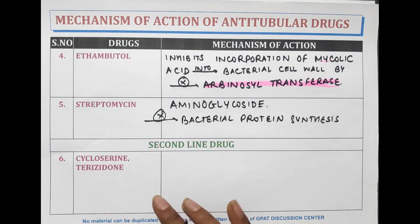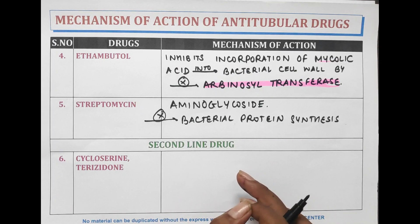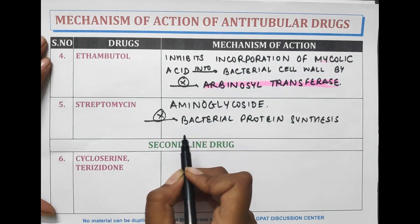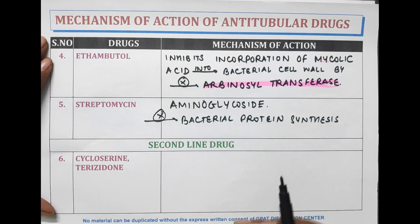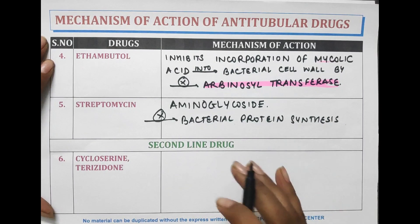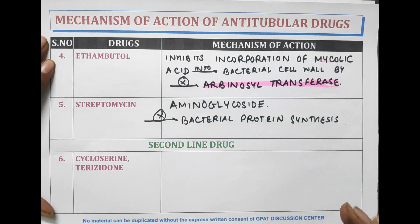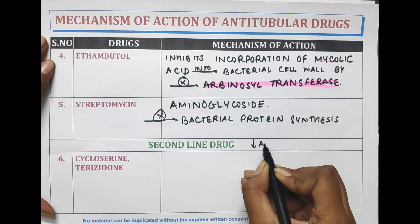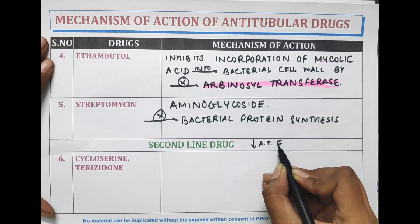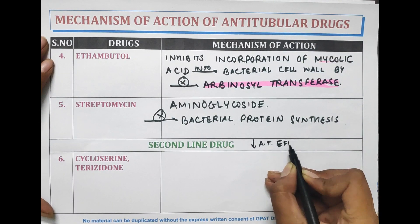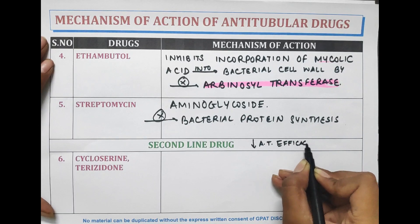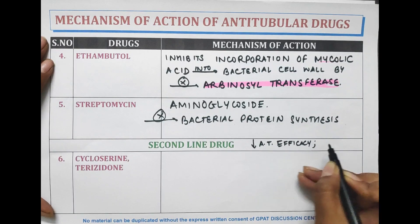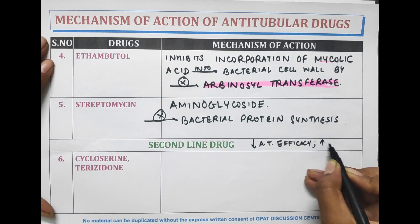Next are the second line drugs of anti-tubercular therapy. Second line drugs are drugs which have low anti-tubercular efficacy but high toxicity.